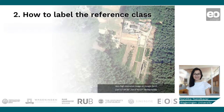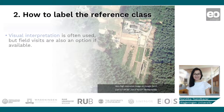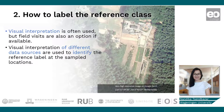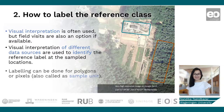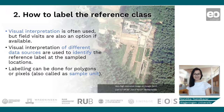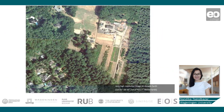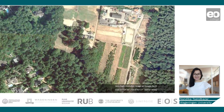When we have selected the sample location for training data, the next step is to label the reference class. Visual interpretation is often used, but if field data collection is available, it's also a good option. For visual interpretation, we use different remote sensing data sources, such as very high resolution images, to identify the reference label. As you can see, it's quite clear from a very high resolution image which areas are forested and which are built up. For training data, the labeling can be done for polygons or pixels, also known as sample units. It's important to note that the labeling should be of high quality, so we need to use good data sources for visual interpretation.